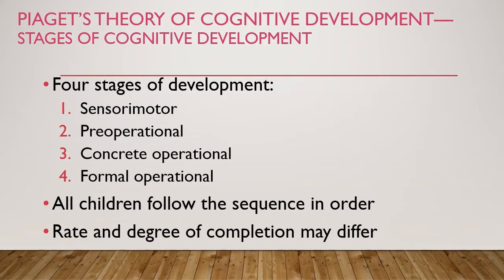According to Piaget's theory of cognitive development, cognitive development has four stages: sensorimotor, pre-operational, concrete operational, and formal operational. All children follow the sequence in order, though the rate and degree of development may differ.